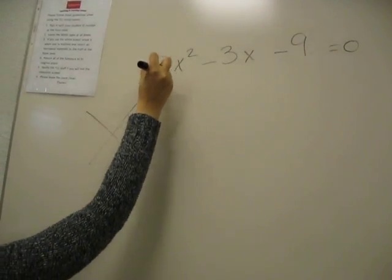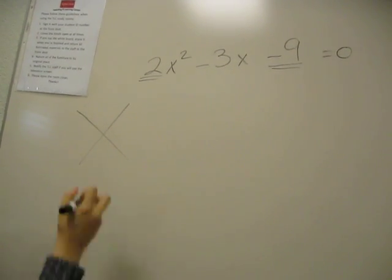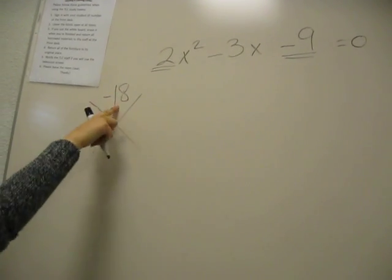We're going to multiply the first number and the last number, so in this case 2 and negative 9, to get negative 18, and we're going to write it in our big X picture right here.